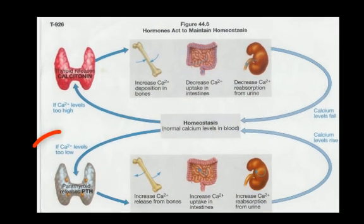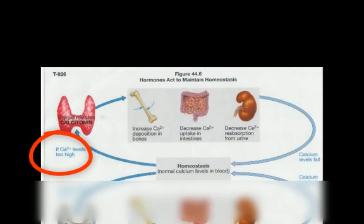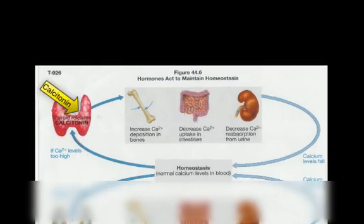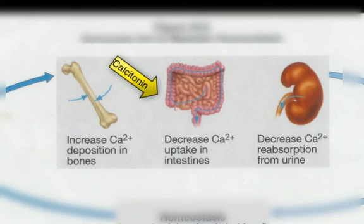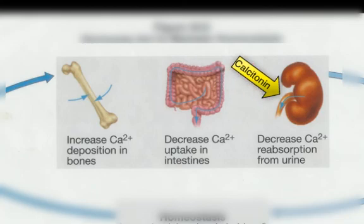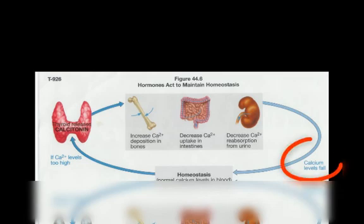Here's how it works. If blood calcium levels are too high, the thyroid gland responds by secreting the hormone calcitonin. Calcitonin has an effect on bone by causing osteoblasts — those are bone-forming cells — to deposit more of the mineral on the bones. In the digestive system, calcitonin inhibits the absorption of calcium from the diet, and the kidneys excrete more calcium than normal. This has an overall effect of eventually lowering blood calcium levels back to normal.